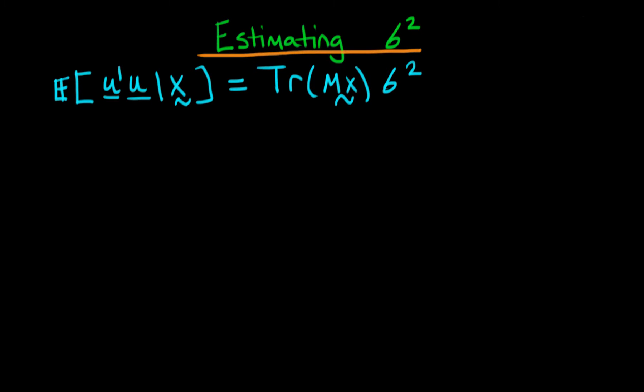In this video we're going to finish off our derivation of an unbiased estimator for sigma squared. This is what we got to at the end of the last video: the expectation of u prime times u given x is equal to the trace of mx times sigma squared.